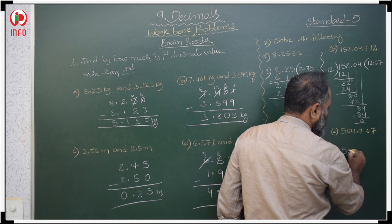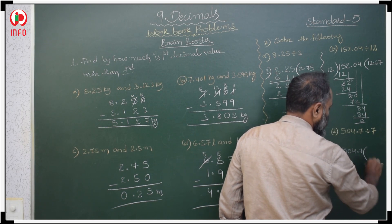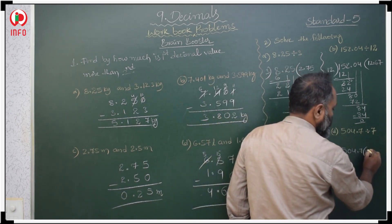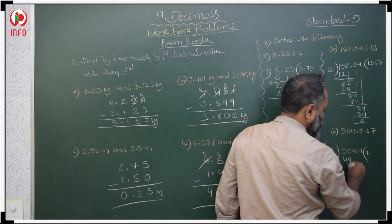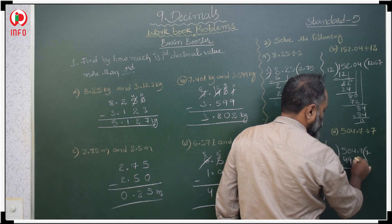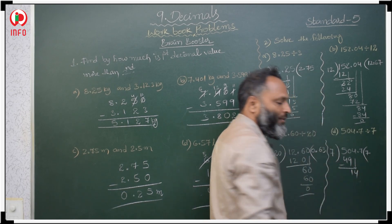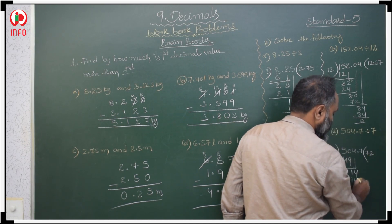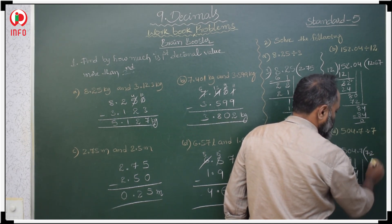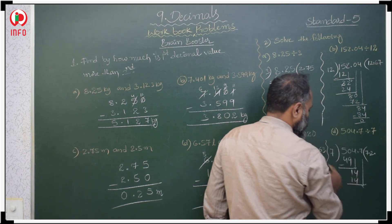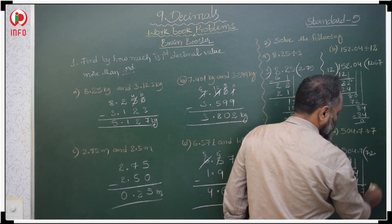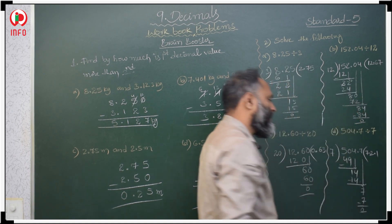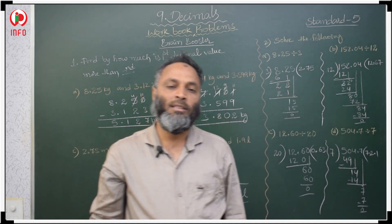Next: 504.7 divided by 7. When you look for 50 in the 7 table, 7 sevens are 49; remainder 1, bring down 4. 7 twos are 14. After that, decimal point, then 7. 7 ones are 7; 7 minus 7 is 0. The answer is 72.1.